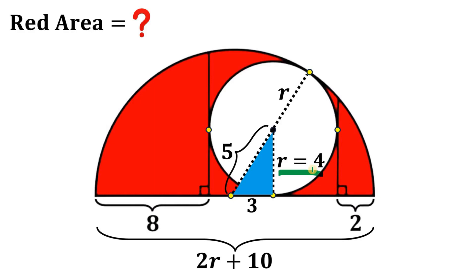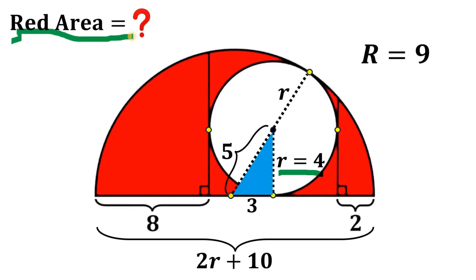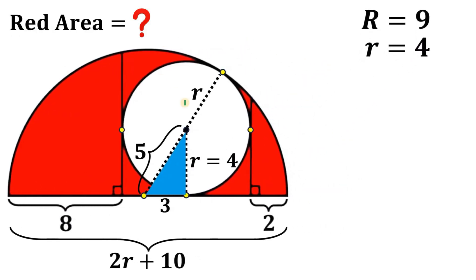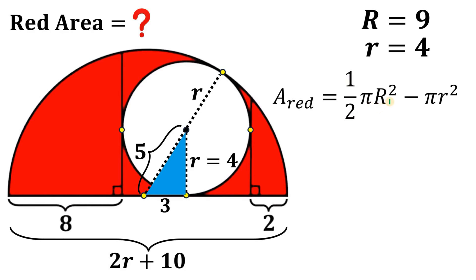Now we know the radius of the circle. If r is 4, the diameter is 8, so the diameter of the semicircle is 2(4) plus 10, which is 18. Let capital R be the radius of the semicircle, so capital R is 9. This is what we need to calculate the red area. To calculate the red area, we need the area of the semicircle — which is one-half pi capital R squared — minus the area of the circle, which is pi small r squared.